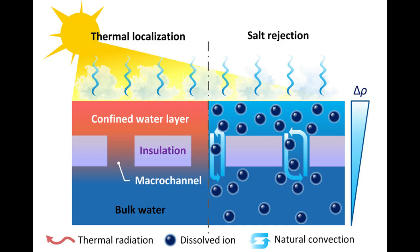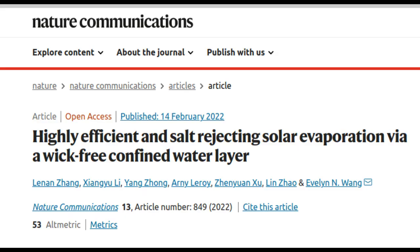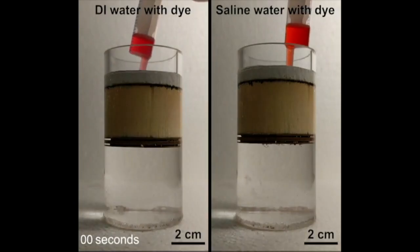Many such efforts have run into problems with fouling of equipment caused by salt buildup, however, which often adds complexity and expense. Now a team of researchers at MIT and in China has come up with a solution to the problem of salt accumulation, and in the process developed a desalination system that is both more efficient and less expensive than previous solar desalination methods.